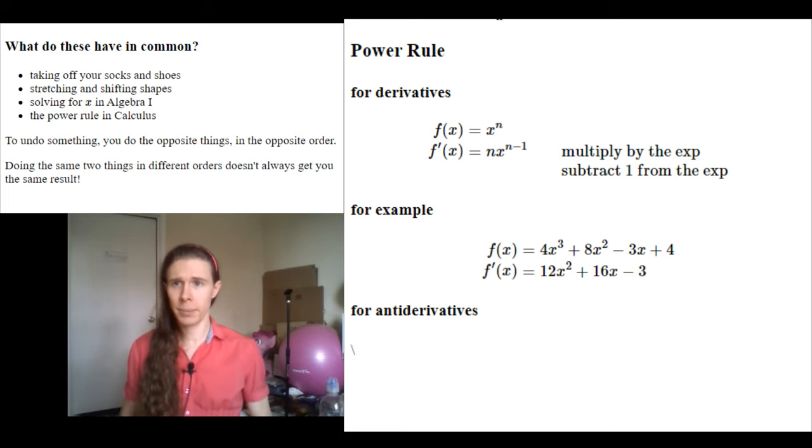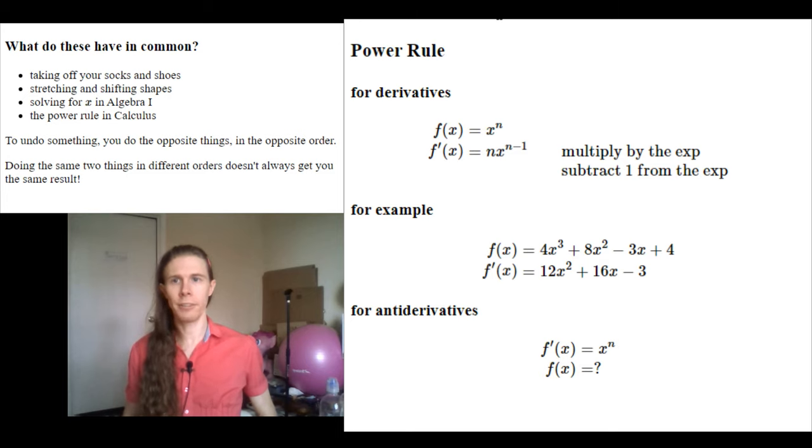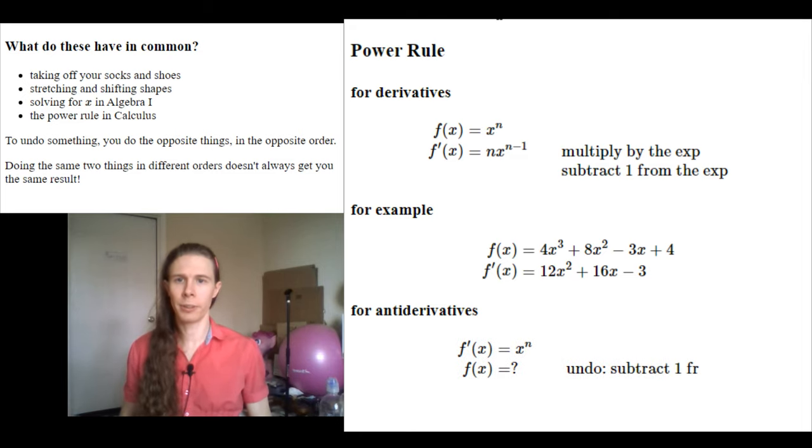So, let's talk about that. The concept of this is that we're being handed a function and being told it's the derivative of something. What could it be the derivative of? So instead of being told f of x equals x to the n, we're told that f prime of x is x to the n. And we're trying to figure out what could have that as its derivative.